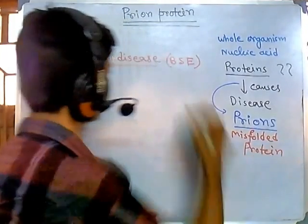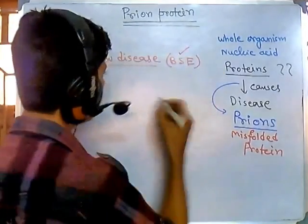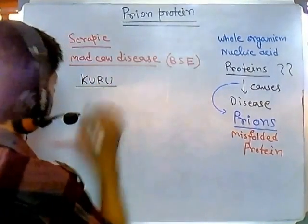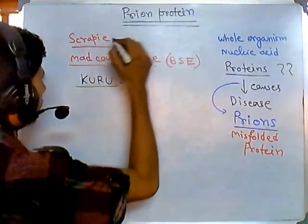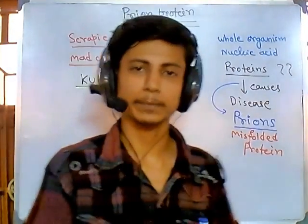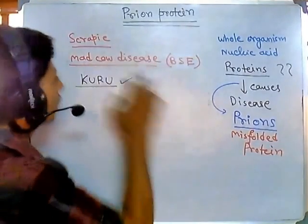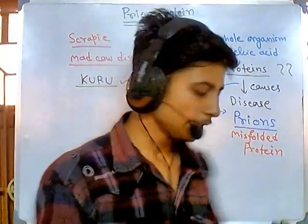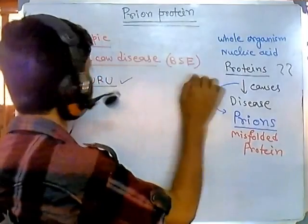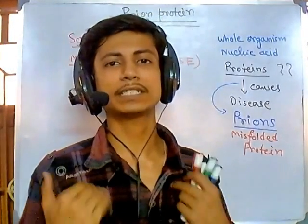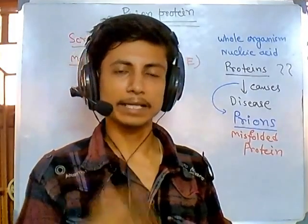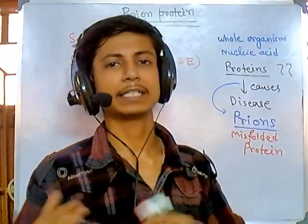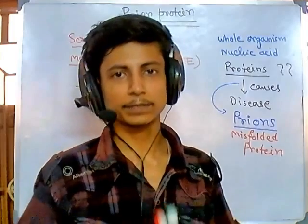These misfolded proteins can cause dangerous effects inside our body and can eventually kill a human being. In humans, the relevant disease is kuru. Scrapie occurs in sheep, and mad cow disease occurs in cows — that's where the name came from. All of these prion diseases — BSE, scrapie, and kuru — are involved in the central nervous system. They cause failure of cognition, behavior, and brain function, leading to massive brain damage and central nervous system failure.